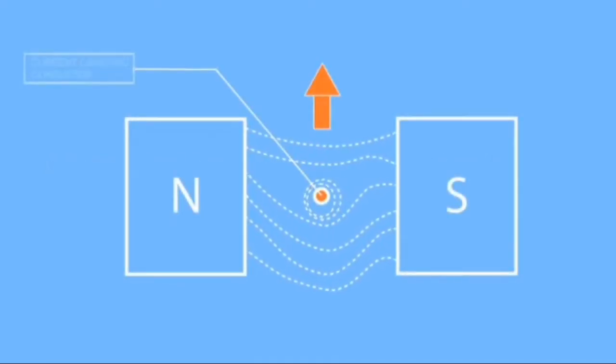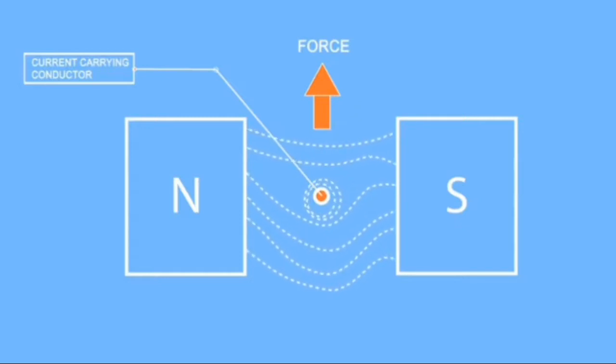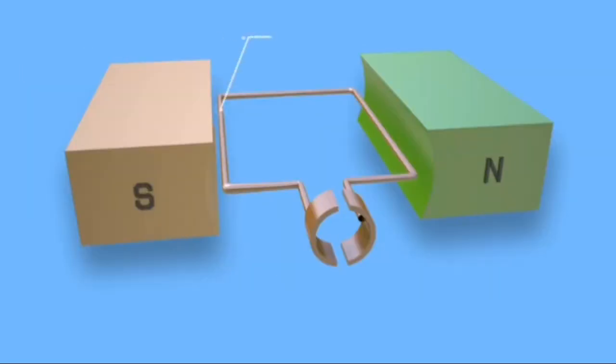Working principle of DC motor is very simple. We can see that when a current conductor is placed in magnetic field, it experiences some force in particular direction.